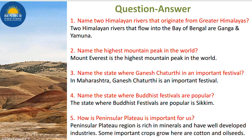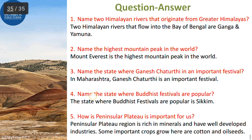Now the question and answers for this chapter. Name two Himalayan rivers that originate from the greater Himalayas that flow into the Bay of Bengal — they are Ganga and Yamuna. Name the highest mountain peak in the world — that is Mount Everest. Name the state where Ganesh Chaturthi is an important festival — that is Maharashtra. Name the state where Buddhist festivals are popular — that is Sikkim. How is the Peninsular Plateau important for us? Because it is rich in minerals, has well-developed industries, and important crops grown there are cotton and oil seeds.